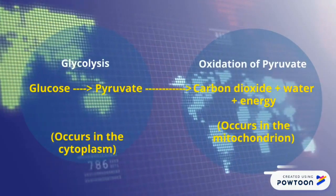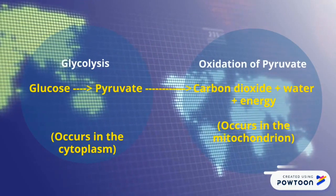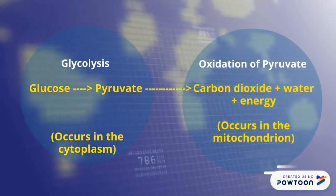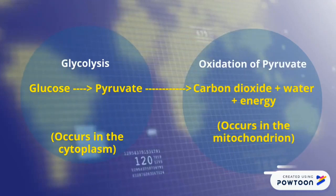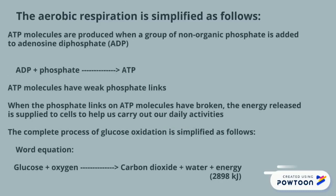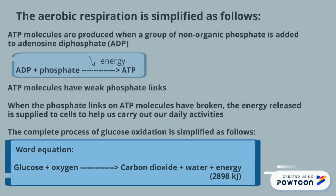During oxidation of pyruvate, pyruvate will break down into carbon dioxide, water, and energy. This occurs in the mitochondria. ATP molecules are produced when a group of inorganic phosphate is added to adenosine diphosphate (ADP). ADP plus phosphate with energy will produce ATP.